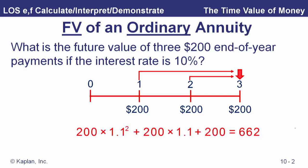Here's one way we could approach that problem. That first $200 grows at 10 percent for two years. The second $200 right there grows at 10 percent. And then the last $200 is paid in at time three. So if we added up all those, we'd get $662.